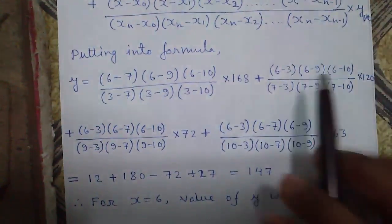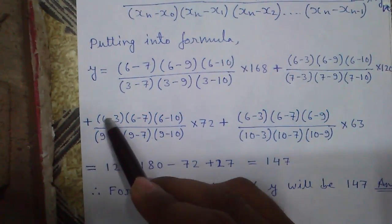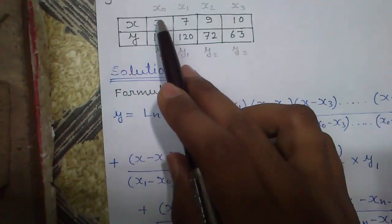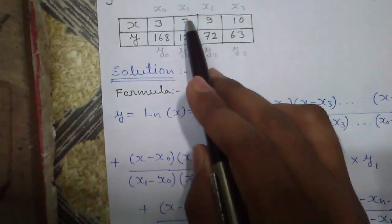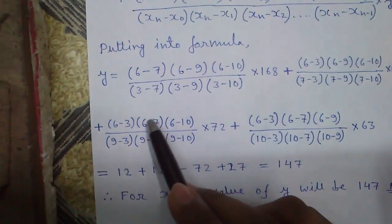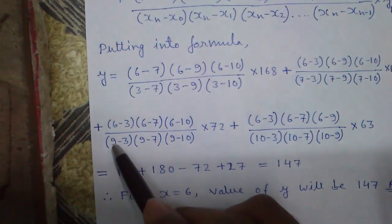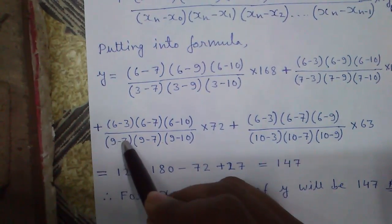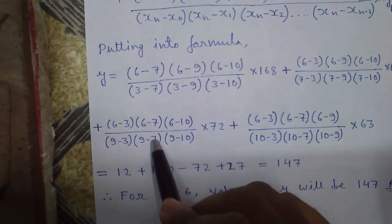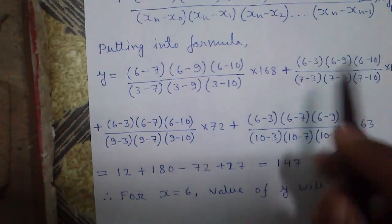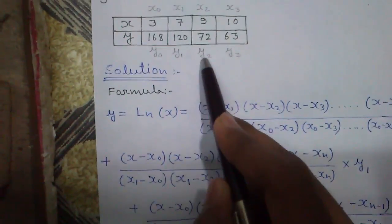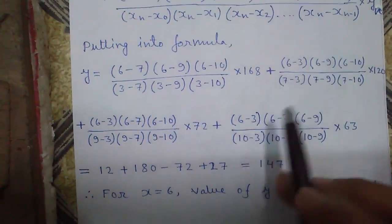Similarly here x2 will be missing, so x minus x0, x minus x1, and x minus x3. That's 6 minus 3, 6 minus 7, and 6 minus 10 divided by x2 minus x0, x2 minus x1, and x2 minus x3 times y2. y2 is 72.